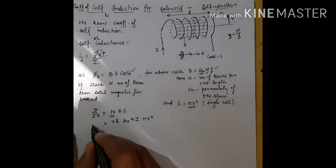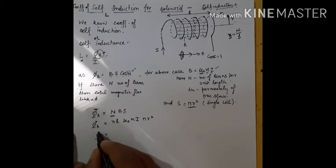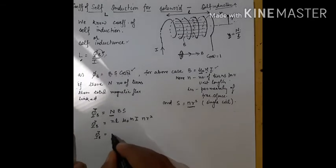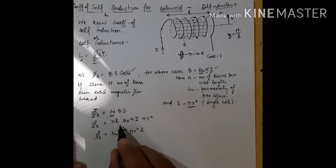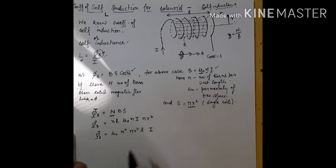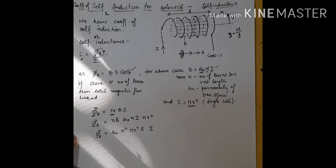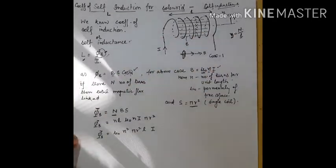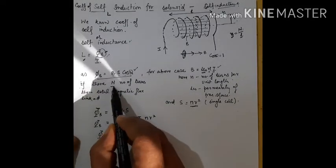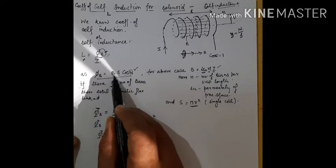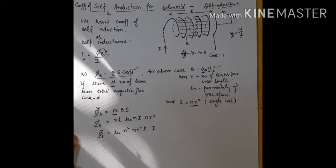Arranging the terms, we finally get the total magnetic flux linked with all the coils as μ₀·n²·π·r²·L·i. We calculated the flux for a single coil first, then multiplied by the total number of turns n·L to get this result.